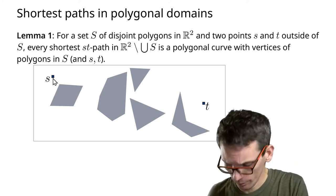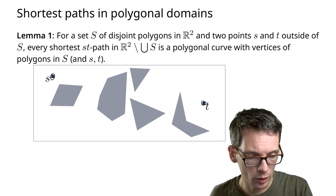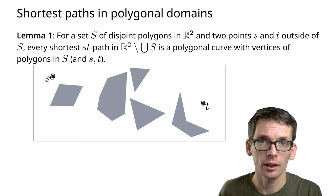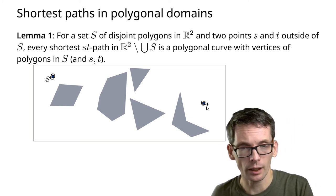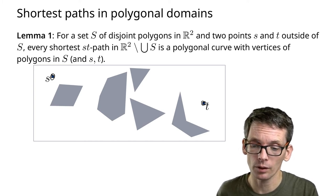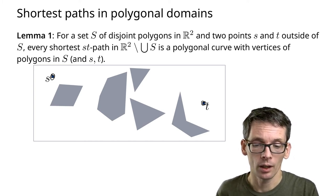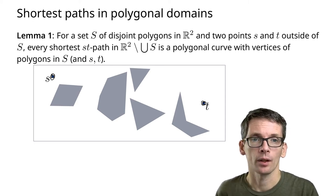We've seen that when we use vertical decomposition, we don't actually get the shortest path. Now we're going to see how we can get the shortest path using visibility graphs. For this, the following lemma or observation is the key observation. If I want to find the shortest path from s to t,